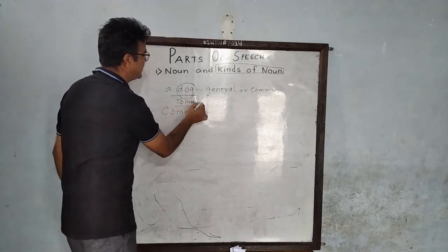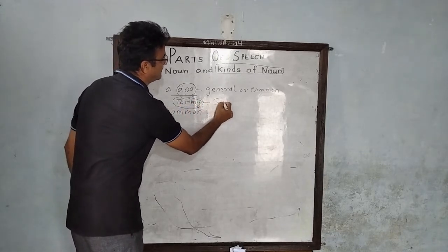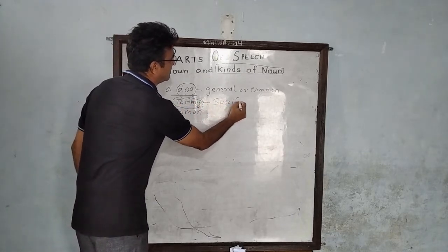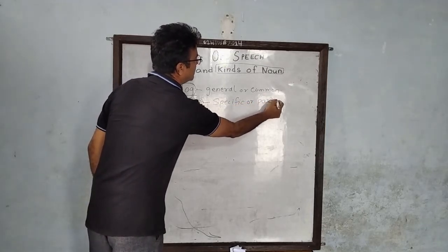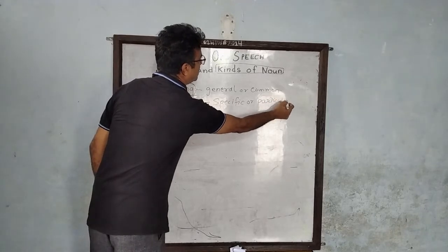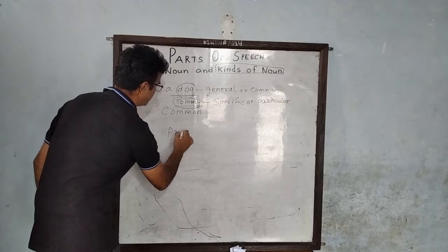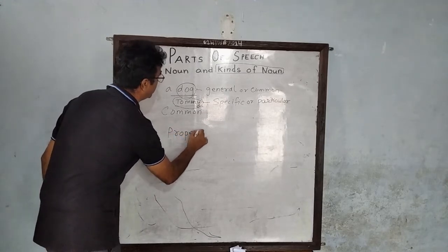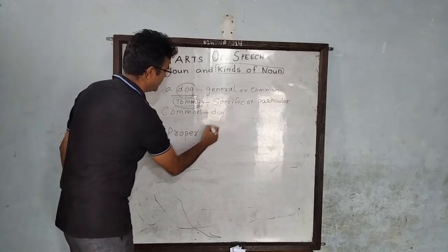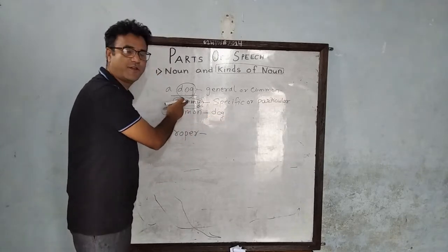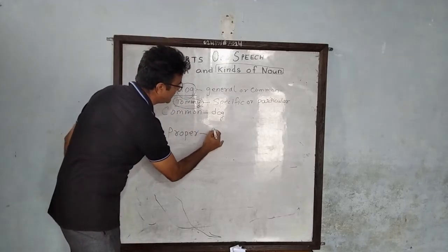Tommy. Here, this is specific or particular, so this is proper. This dog is a common noun, and this name of the dog, Tommy, is a proper noun.